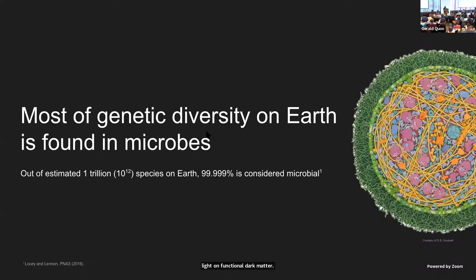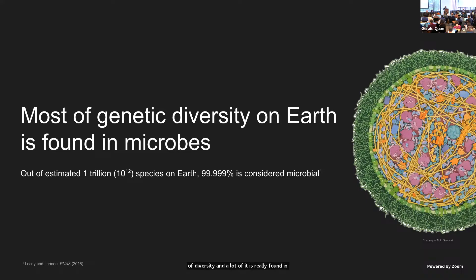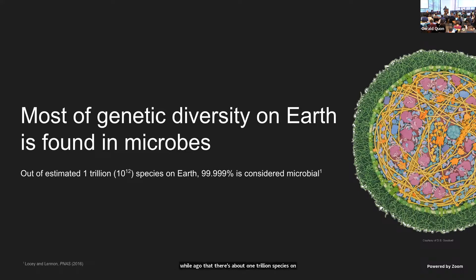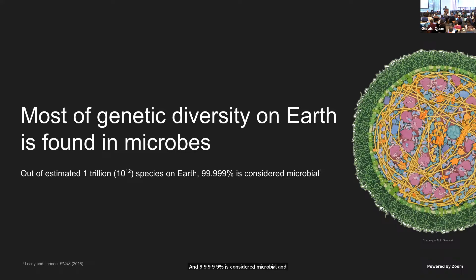When we take a step back and look at the genetic diversity present in nature, one thing that still astonishes me is that there's a lot of diversity, and a lot of it is really found in microbes. There was an estimation that there's about one trillion species on Earth, and 99.999% is considered microbial — bacteria, archaea, viruses, and single-cell eukaryotes.